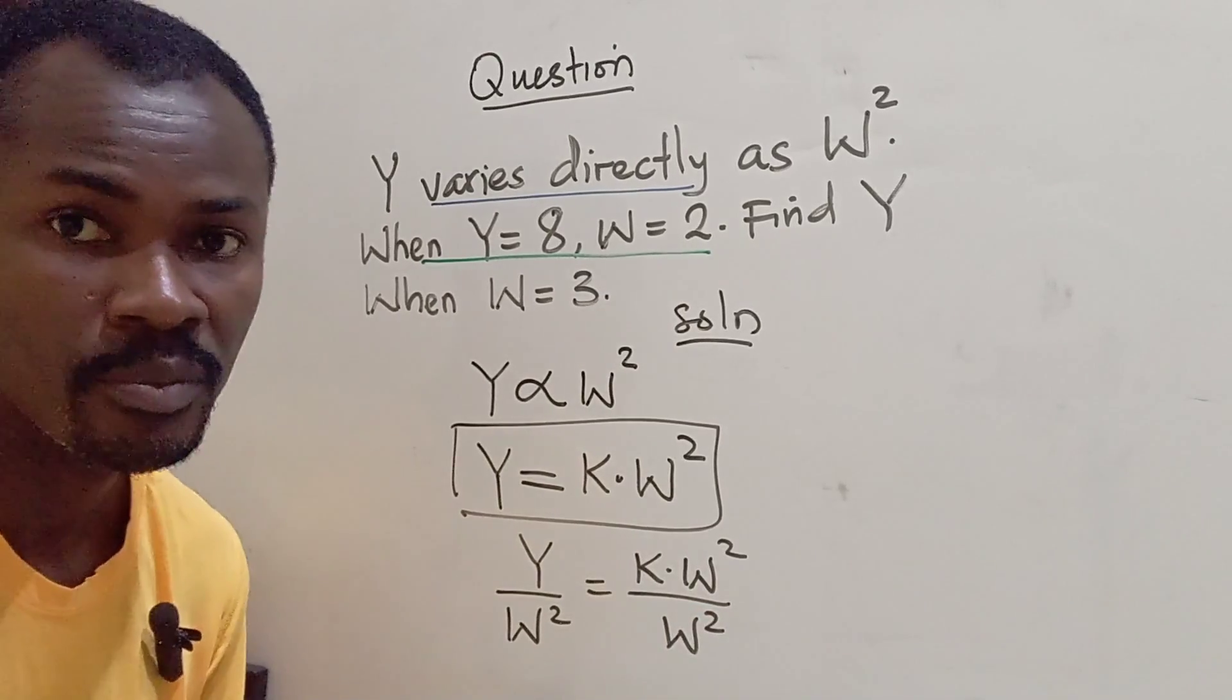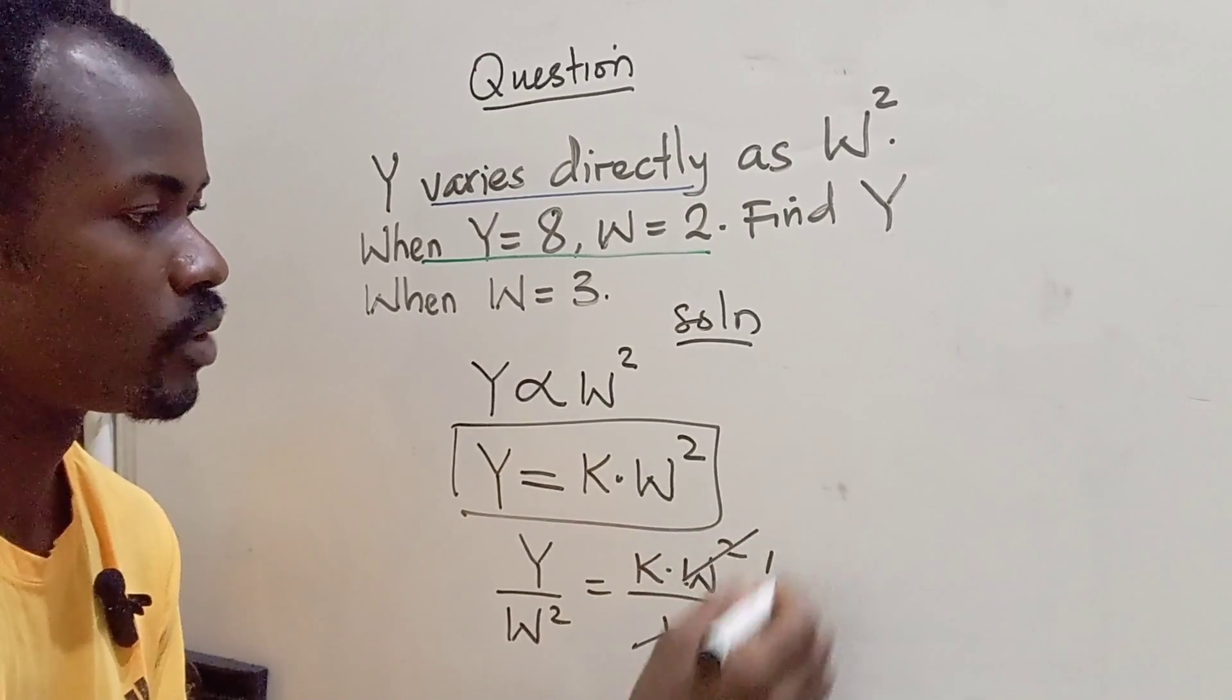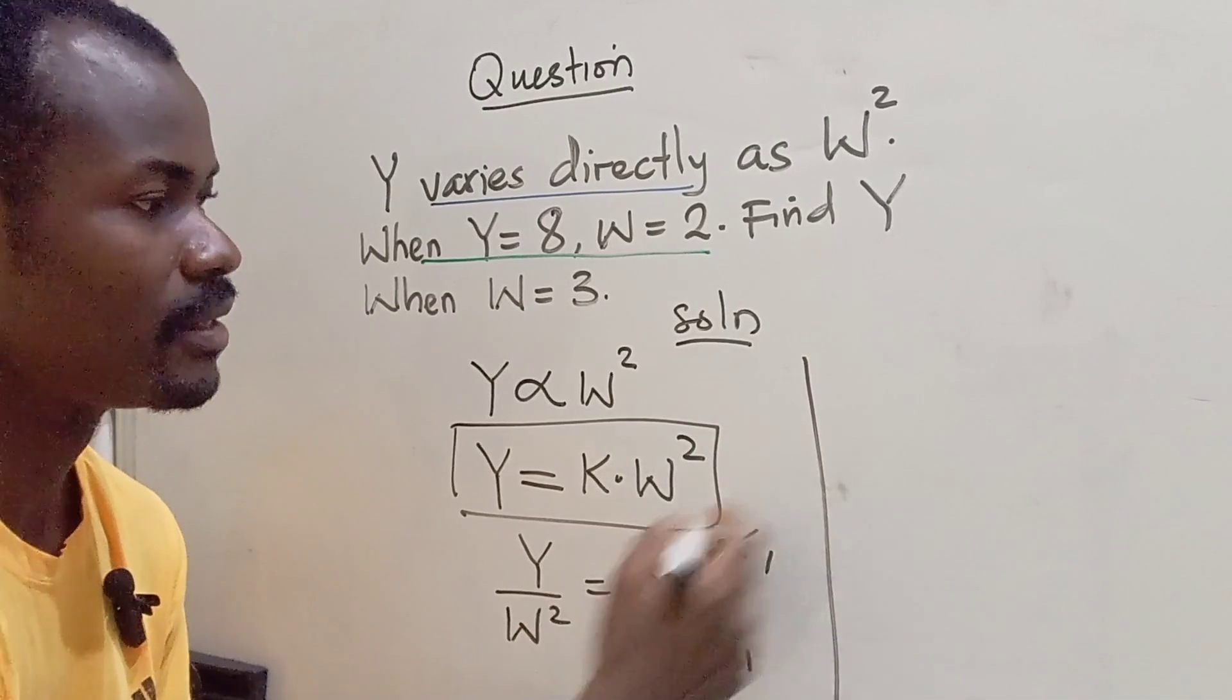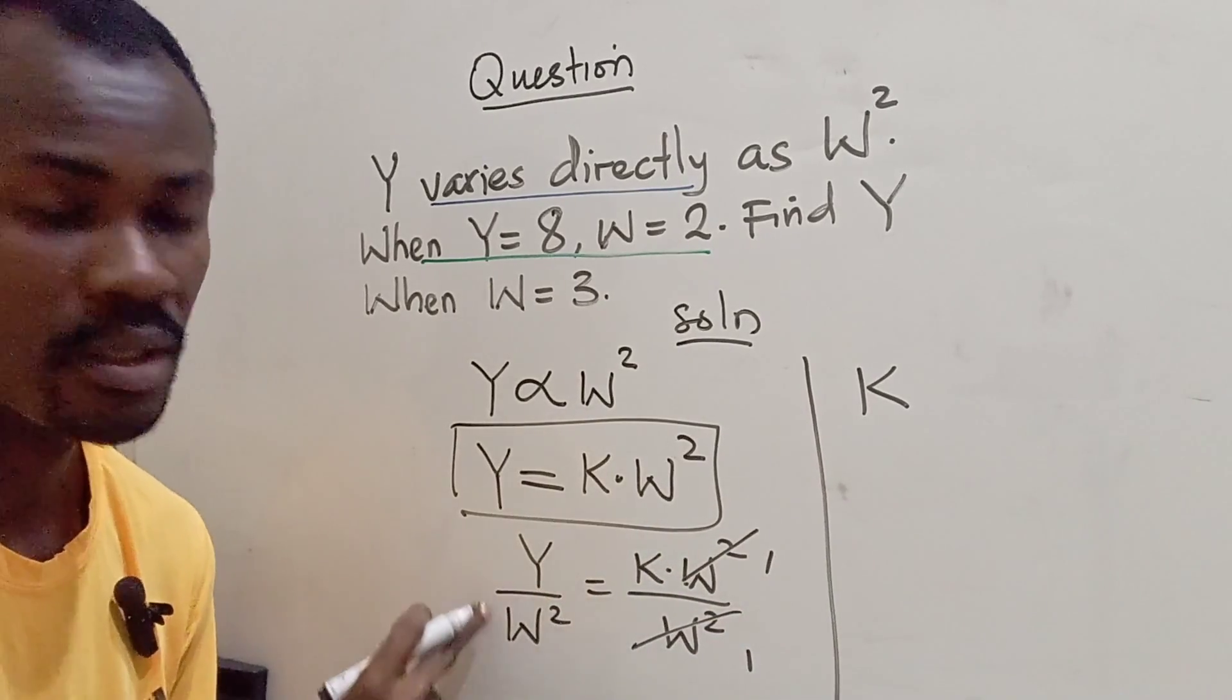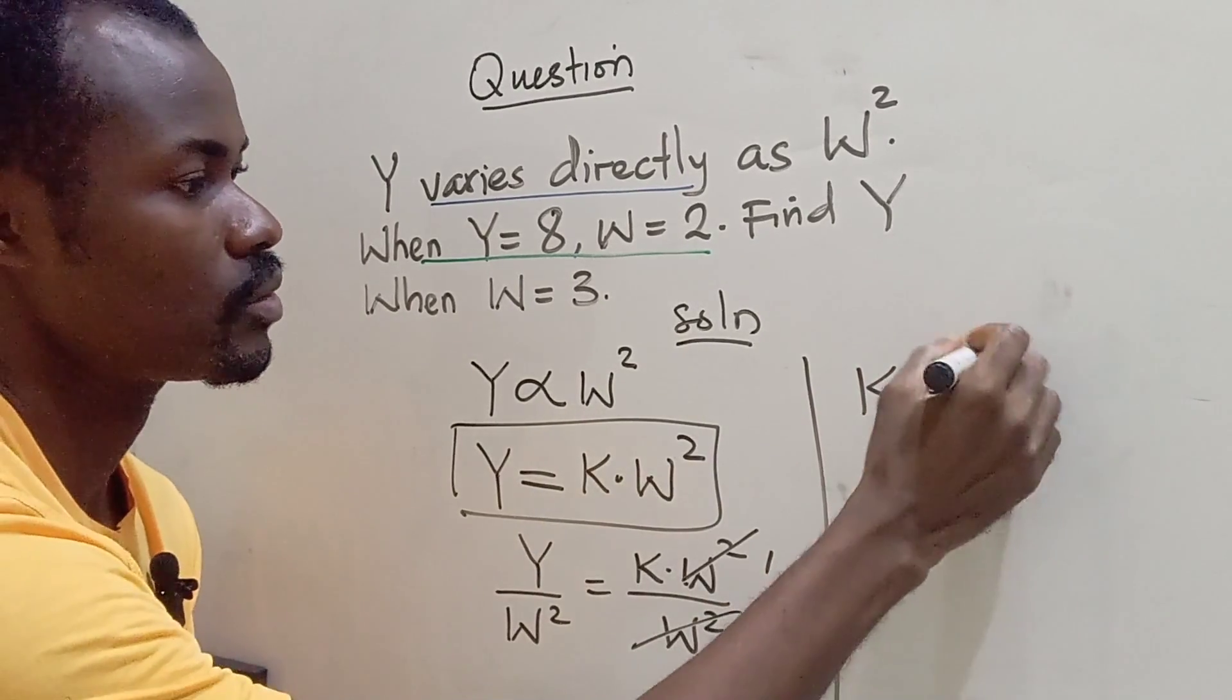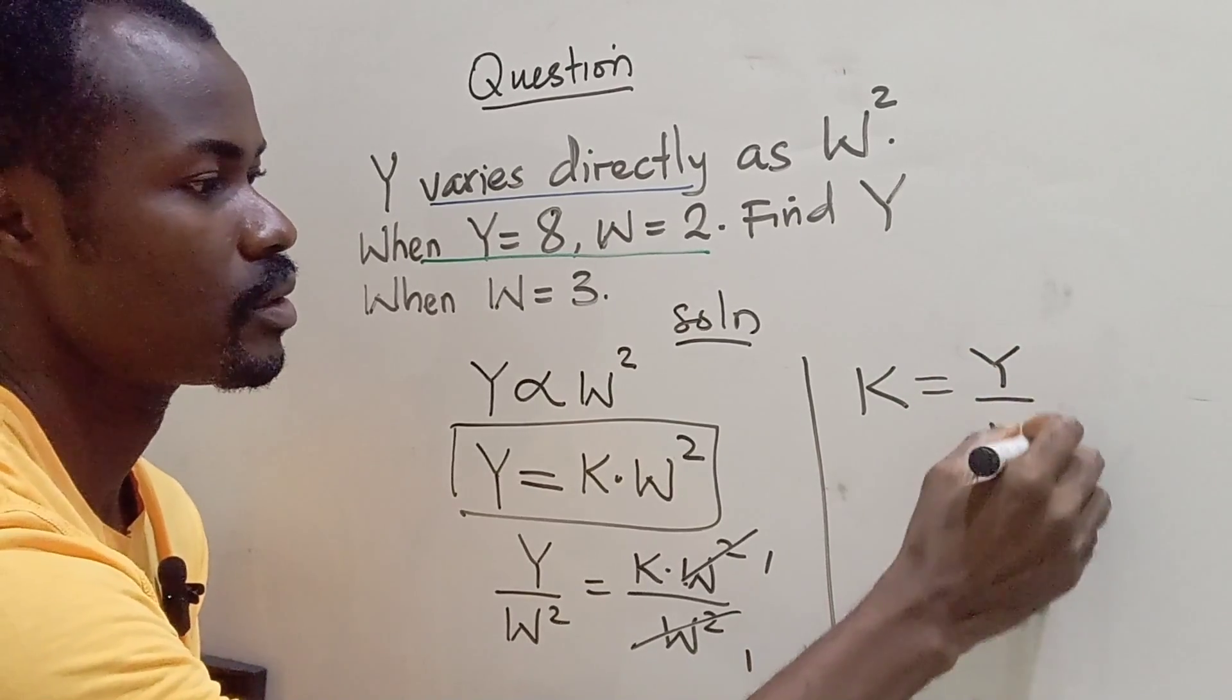is of course K W squared divided by W squared. So these can cancel out. This is 1, 1. So we have K left on the right hand side, which equals Y over W squared.